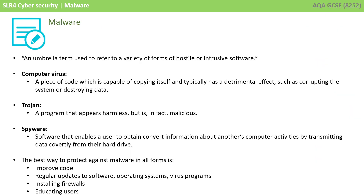So just to recap: malware is an umbrella term used to refer to a variety of forms of hostile or intrusive software. The three types of malware you need to know about are computer viruses, trojans, and spyware. The best ways to protect against all forms of malware are improved quality of code, regularly updating your software, installing firewalls, and simply educating users to the risks.